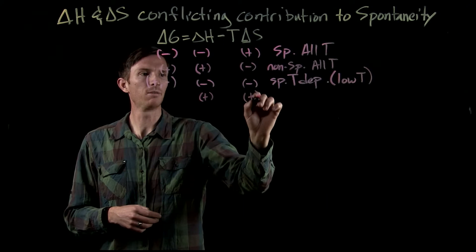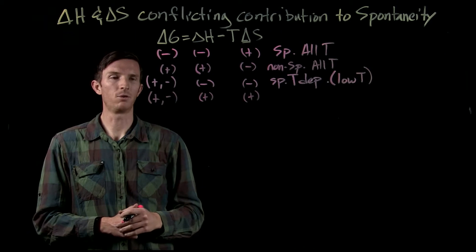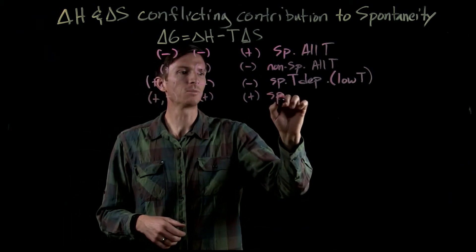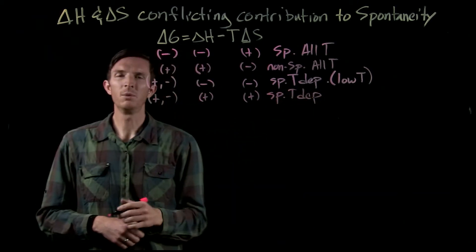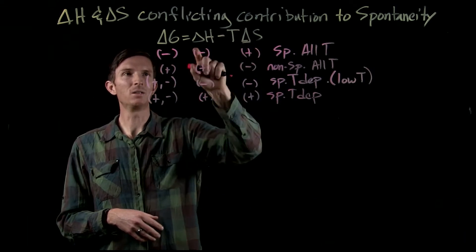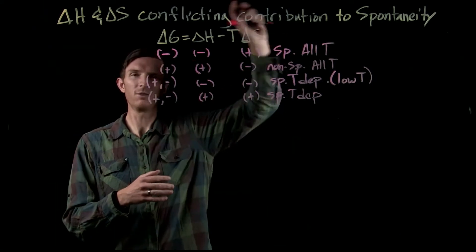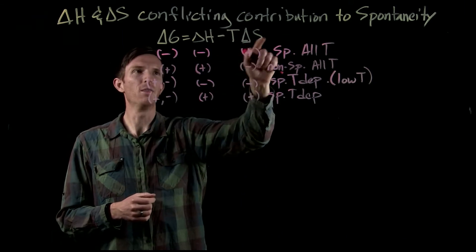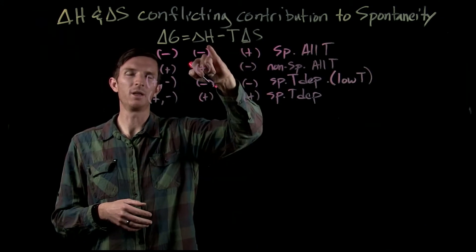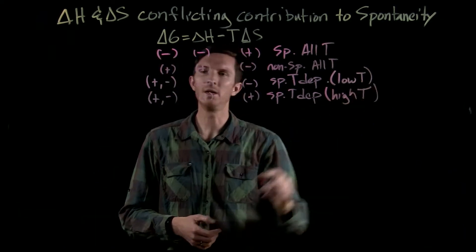We also have the possibility where we have both delta H and delta S being positive. Again, we have the ability for delta G to be negative or positive depending on the temperature. Our spontaneity is temperature dependent, but now the opposite is true. At a low temperature, the entropy term is smaller in magnitude than the enthalpy term, so it's overall non-spontaneous at low temperature. Eventually, if we increase the temperature, this value becomes a bigger contribution, and at some point becomes greater than our enthalpy and delta G becomes negative — spontaneous at high temperature.